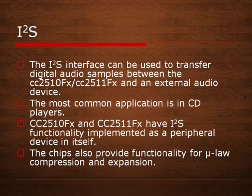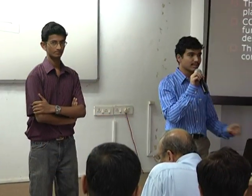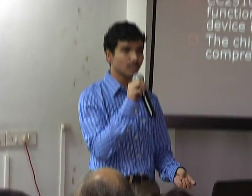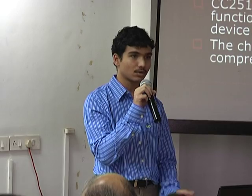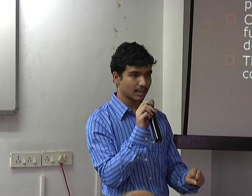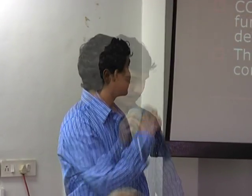The most common application is in CD applications. The CC2510 board has I²S functionality implemented as a peripheral. What we need to do is design the code as per our requirements, modify the timing changes, and according to the sound we want to listen at a specific rate, we modify the code. The chip also provides the functionality of mu-law compression and expansion. Compression is done at the transmitter side where data sent through the mic is compressed and sent through the radio, and at the receiver side the data is received via radio, expanded, and then received.